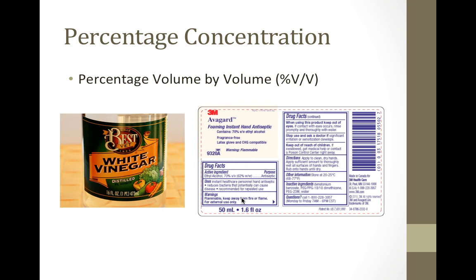So percentage volume by volume: this occurs when we have a solute that is a liquid and the solution formed is also a liquid. A very common example is vinegar. It says 5% acidity, which means you have 5% of the solute — acetic acid — in that solution. The solvent is water. Another example is hand antiseptic, which says 70% V/V ethyl alcohol, meaning 70% of your solute, ethanol, is dissolved in water.